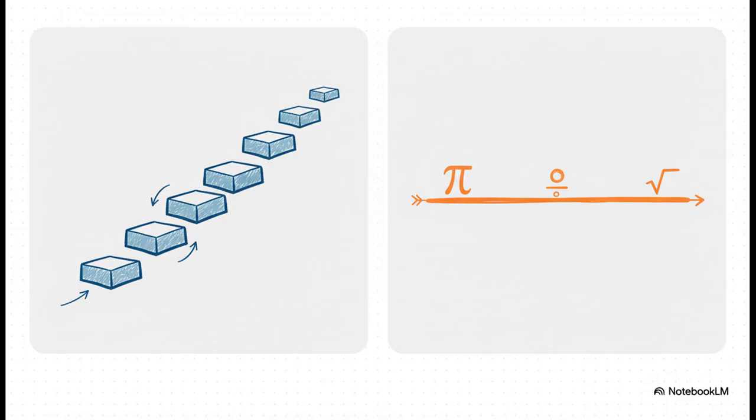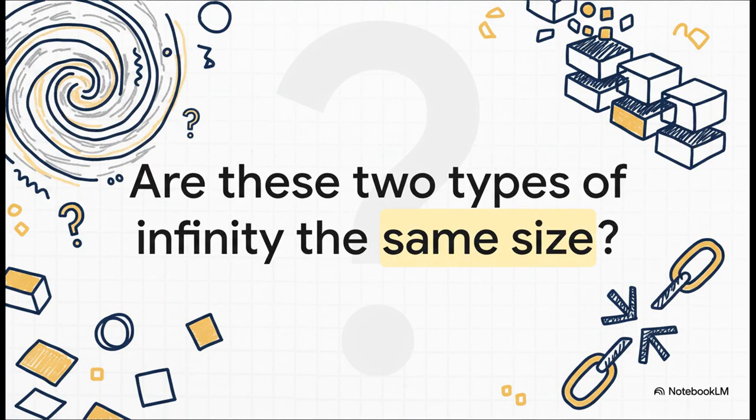Cantor's whole thing is about two different kinds of infinite sets of numbers. On one hand, you've got the natural numbers. Super simple, right? These are the counting numbers we learn as kids. One, two, three, and so on, forever. But on the other hand, you have the real numbers. This is the whole shebang. It's everything on the number line. Whole numbers, fractions, and all those weird irrational numbers like pi or the square root of two. You know, the ones whose decimals go on forever and ever without repeating.